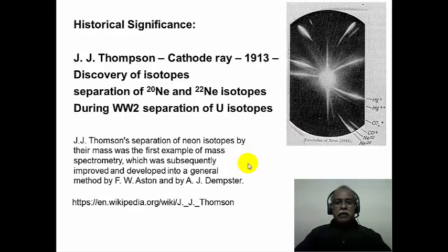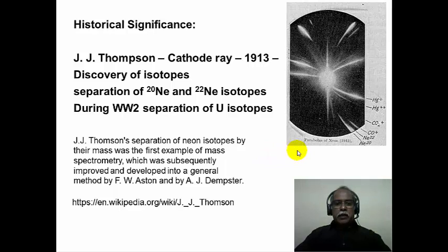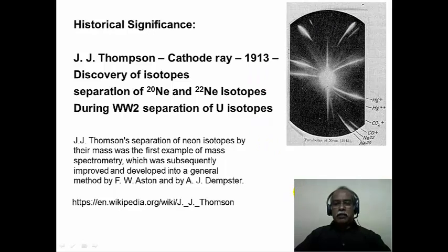J.J. Thomson, during his investigation of cathode ray tubes and discovery of the electron, discovered the isotopes of neon-20 and neon-22. He separated them using a mass spectrometry technique in 1913. During World War II, separation of uranium isotopes for the enrichment of radioactive uranium was undertaken. This picture shows the photographic mass spectrum recorded by J.J. Thomson.